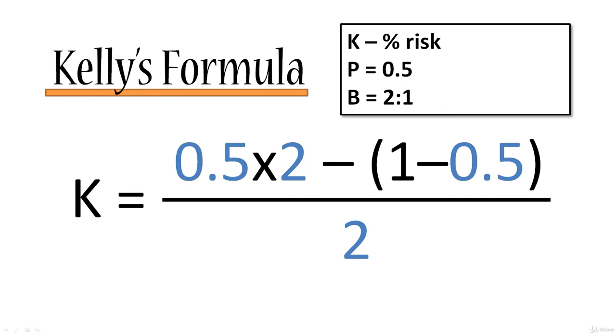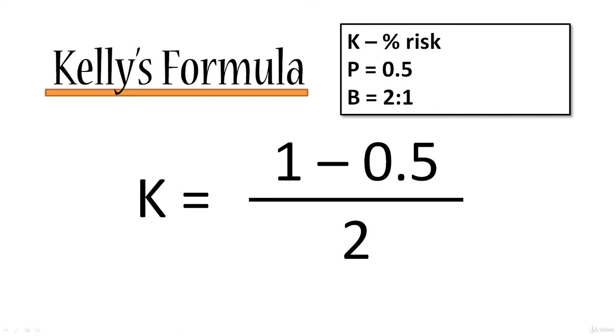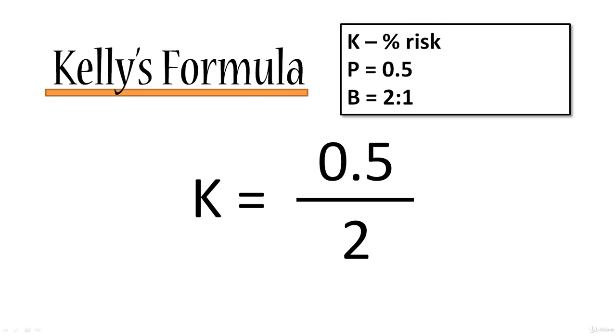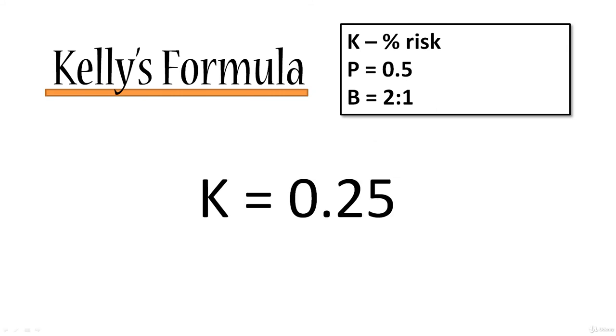And now let's calculate this. So 0.5 times two will obviously give us one and one minus 0.5 will also give us 0.5. So that's our first step. Our next step is calculate the numerator. That's 0.5 over two. And now the final result is 0.25. So that means K is equal to 25%.